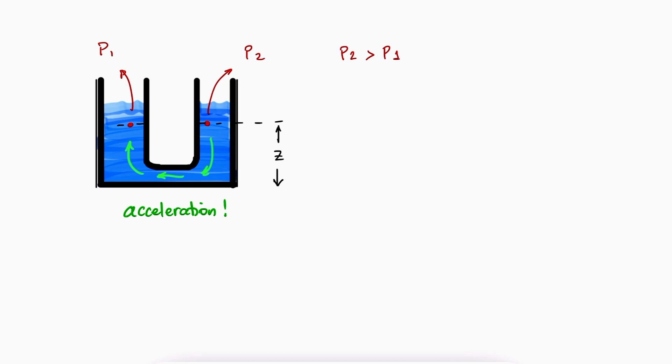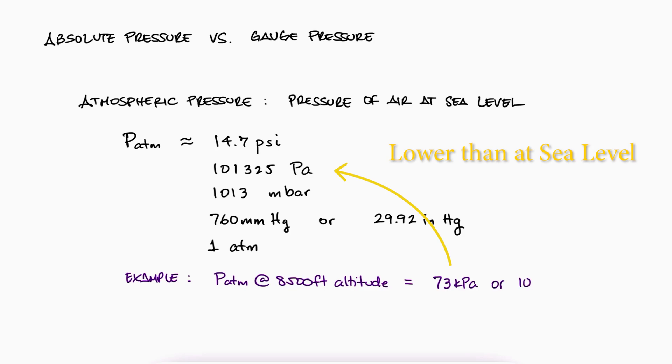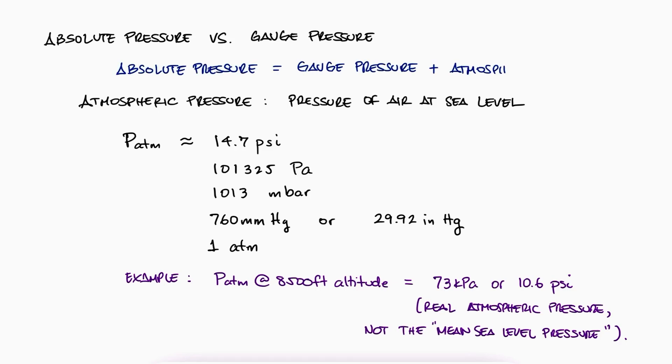Before we quickly go over some examples to better understand this concept of a continuous fluid, we'll point out the difference between absolute pressure and gauge pressure. The atmospheric pressure is the pressure of air, a fluid of course, at sea level. This value is about 14.7 psi, 101,325 pascals, 1013 millibar, 760 millimeters or 29.92 inches of mercury or simply one atmosphere. Of course, depending on the temperature and the altitude, the atmospheric pressure can change. So, for example, in a city with an altitude of 8500 feet, the atmospheric pressure is about 72% of that at 73 kilopascals or 10.6 psi.